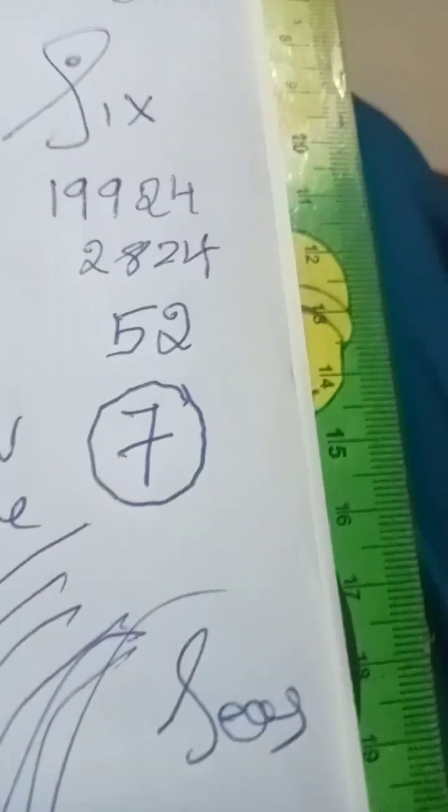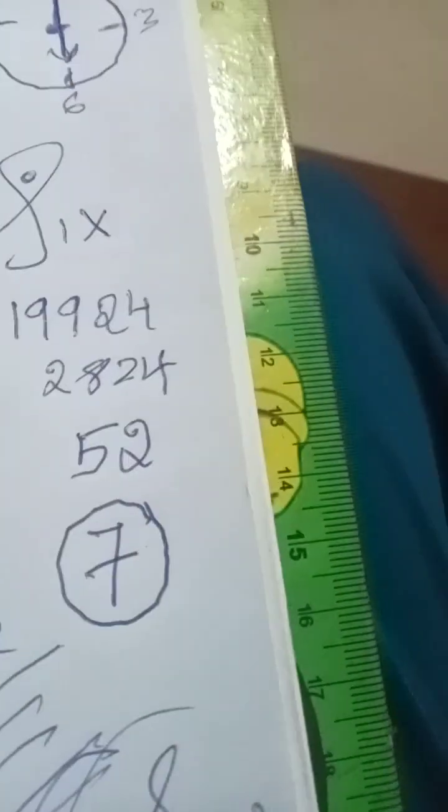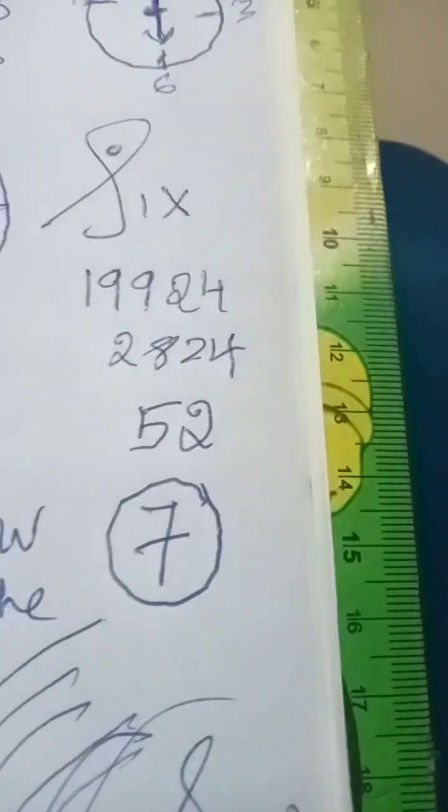What is 7? There are 7 seas, there are 7 continents, there are 7 colors in a rainbow.